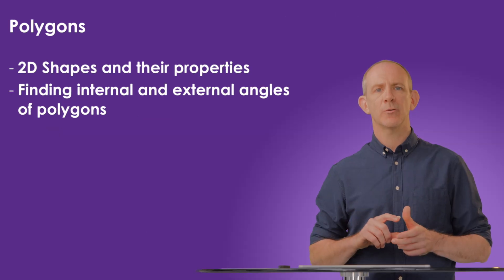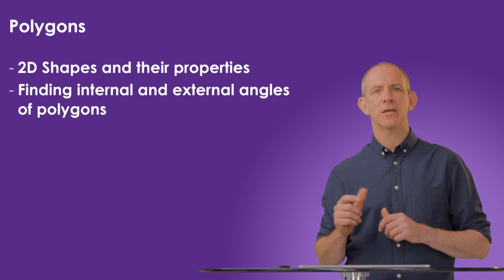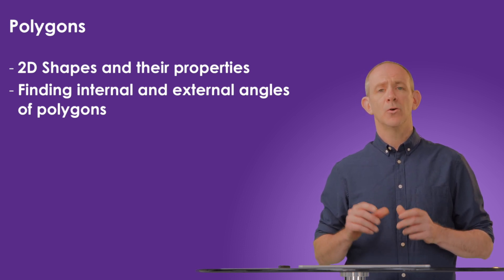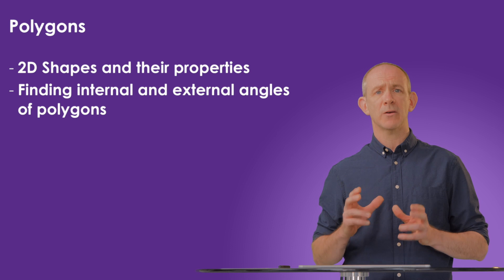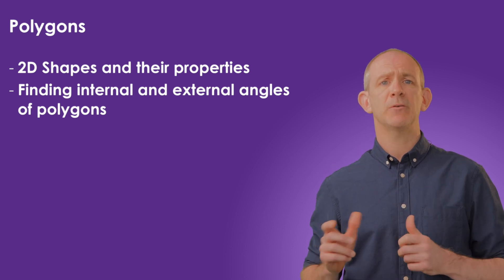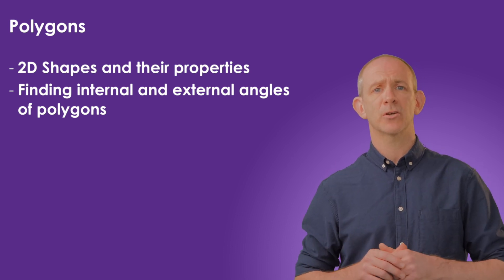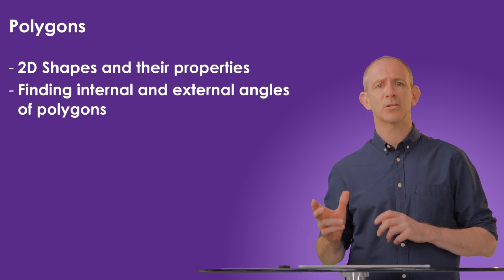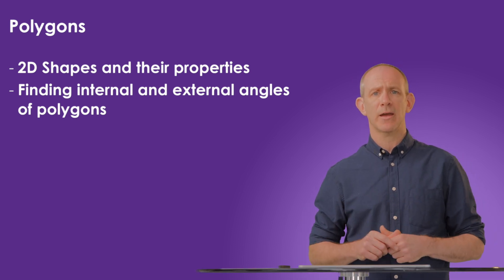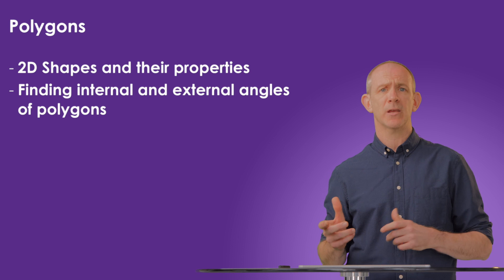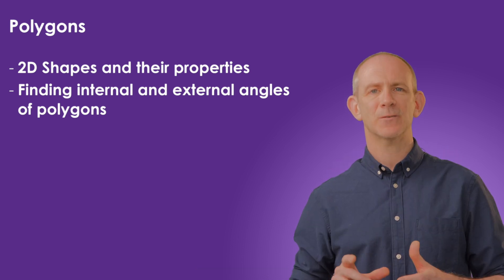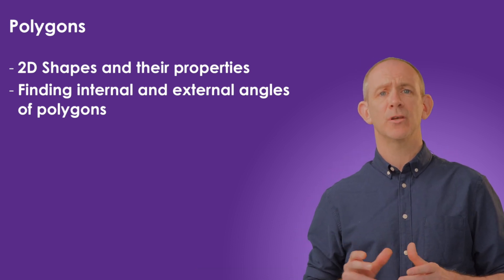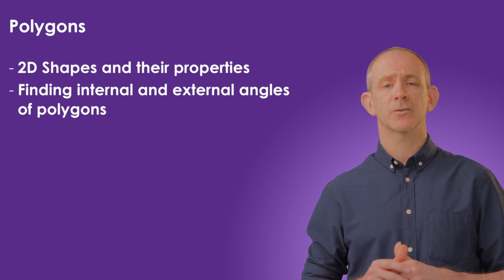Through this video we looked at how to calculate the internal and external angles of polygons. We used a formula to construct the number of triangles in a polygon, and we found that the external angles will always add up to 360. We could use that to determine the interior and exterior angles of regular polygons. In the next video we'll be looking at measurement and conversion using the metric system.